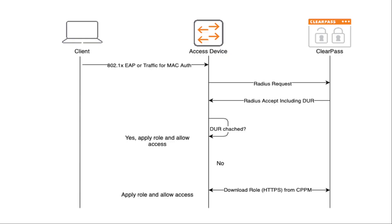Option B — downloadable user roles: downloadable user roles only work with ClearPass server, not a third-party authentication server. When a device connects and authenticates successfully, the switch downloads the user role and applies it. This is not correct because you need a ClearPass server for this feature.